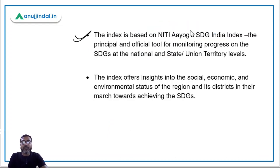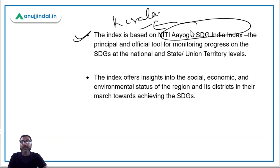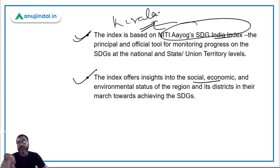The index is based on NITI Aayog's SDG India Index. If you remember, in the SDG India Index, Kerala was the best performing state. This NER SDG District Index offers insights into the social, economic, and environmental status of the states of the northeastern region.